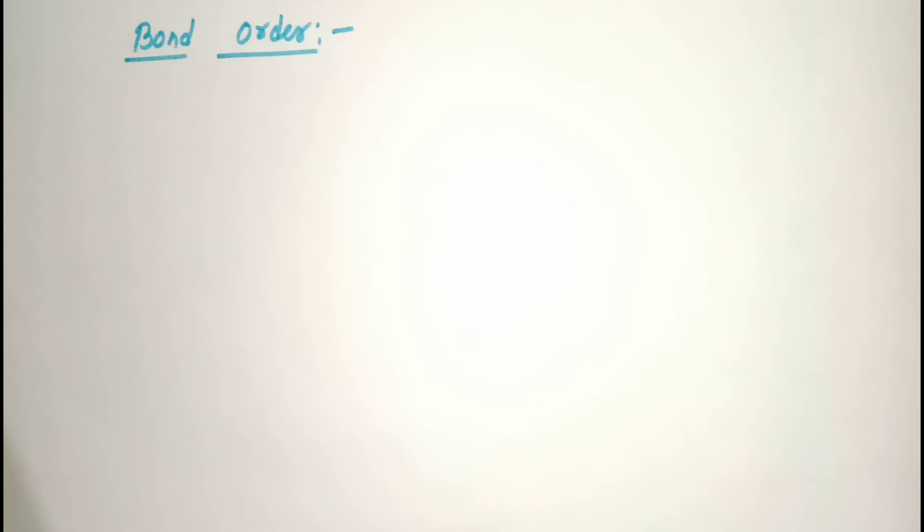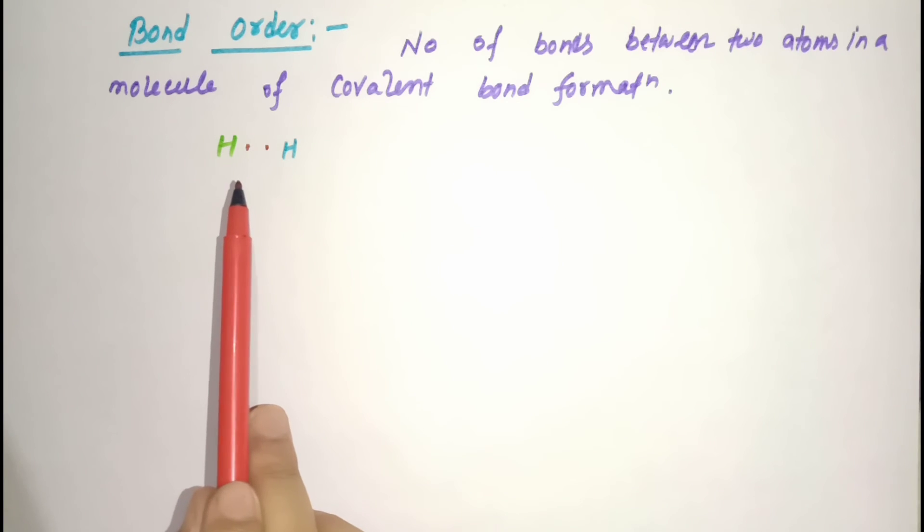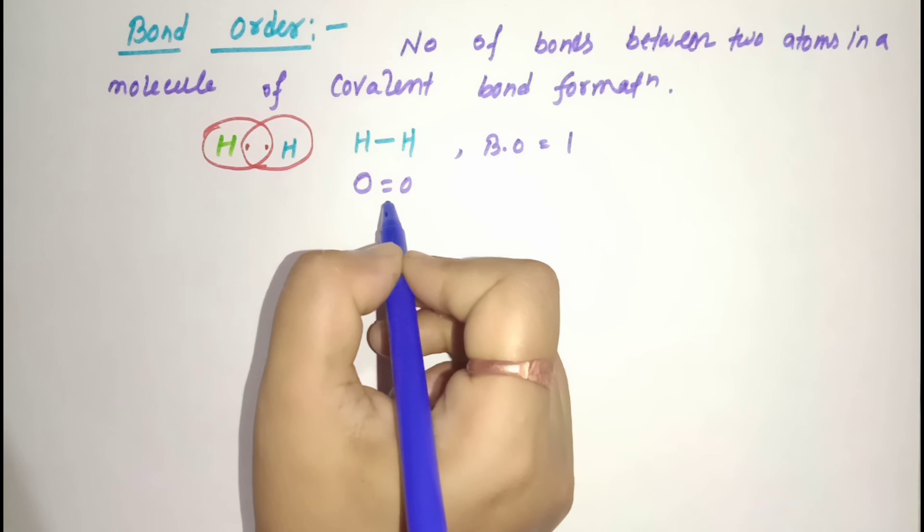Next parameter is bond order. In the Lewis dot structure of covalent bonds, the bond order is given by the number of bonds between two atoms in a molecule. For hydrogen molecule, if we see the Lewis dot structure, two hydrogen atoms share one electron pair to gain stability and form the molecule. So the bond order is 1. Similarly, oxygen forms a double bond, so its bond order is 2.